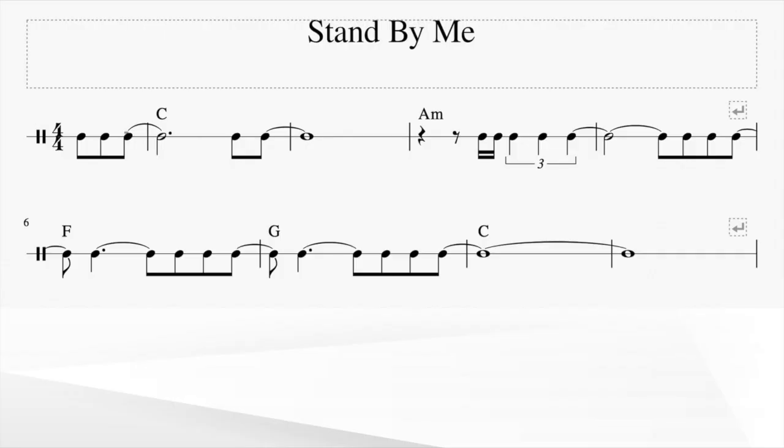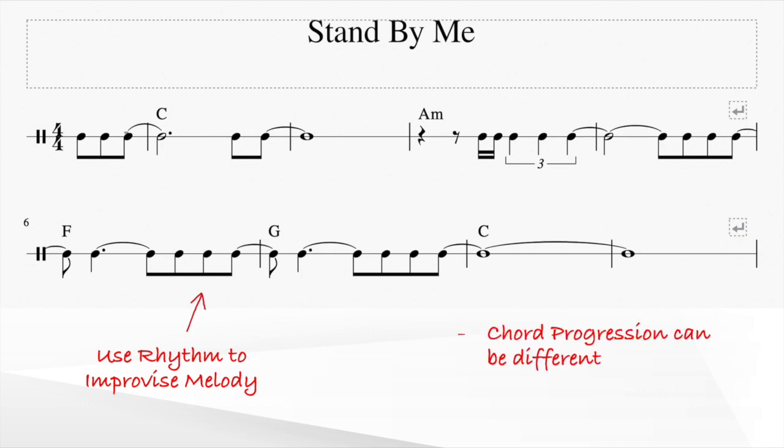We then keep this rhythm in mind, and use it to improvise a melody. Do take note again that our improvisation does not necessarily need to use the same chord progressions as our inspiration song, but the time signature needs to be the same. Here's an example of an improvisation that uses this rhythm, but on a different chord progression.